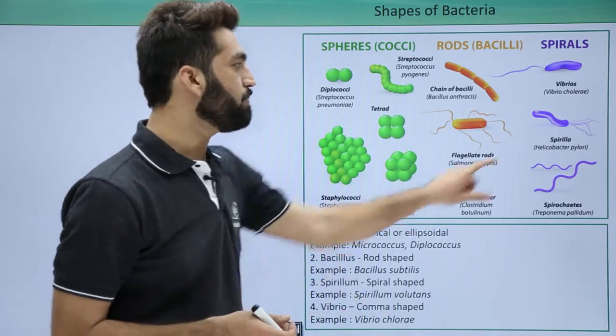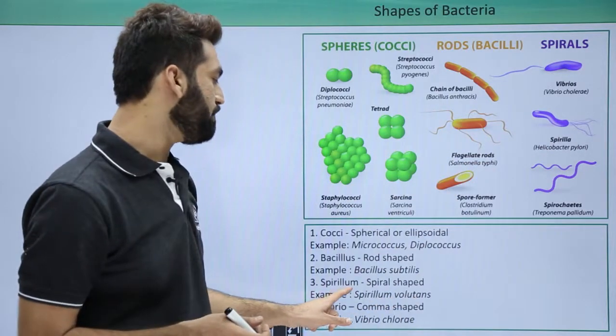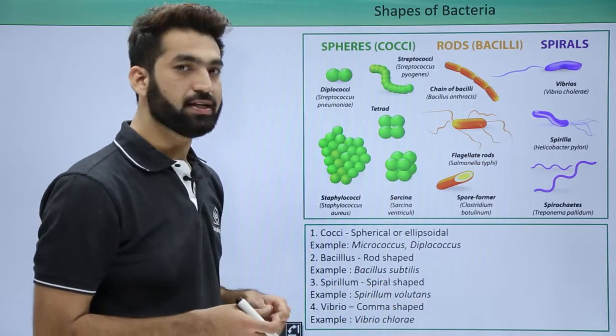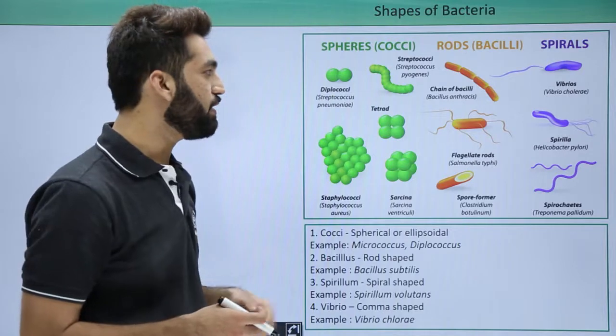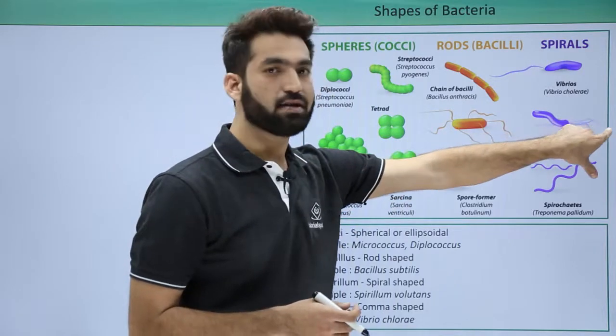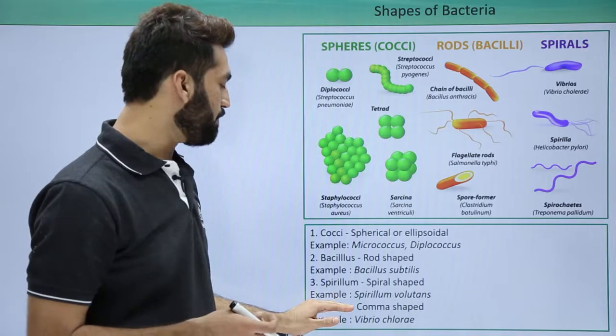The third shape is spiral-shaped. Spirillum volutans is one example of spiral-shaped bacteria. In spiral shape, you can see tufts of flagella present on the ends.